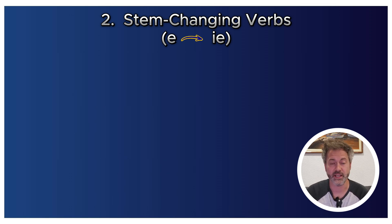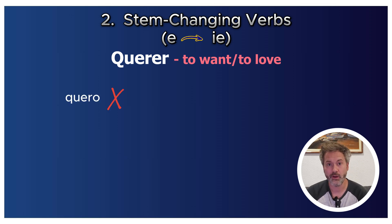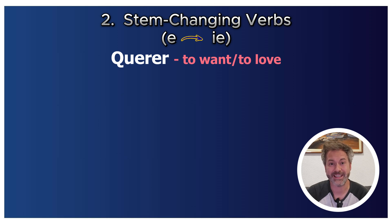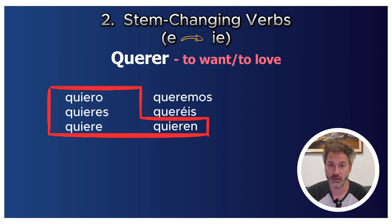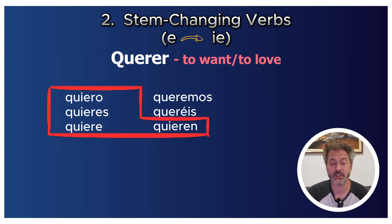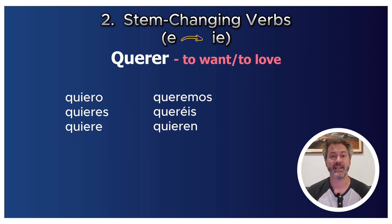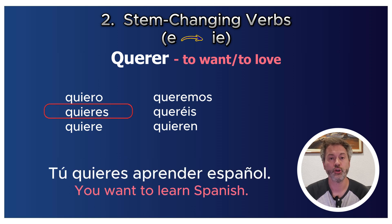Another E→IE example is querer: the E changes to IE, giving 'yo quiero.' Full conjugation: tú quieres, él/ella/usted quiere, nosotros queremos, vosotros queréis, ellos/ellas/ustedes quieren. For example: 'Tú quieres aprender español' — You want to learn Spanish.